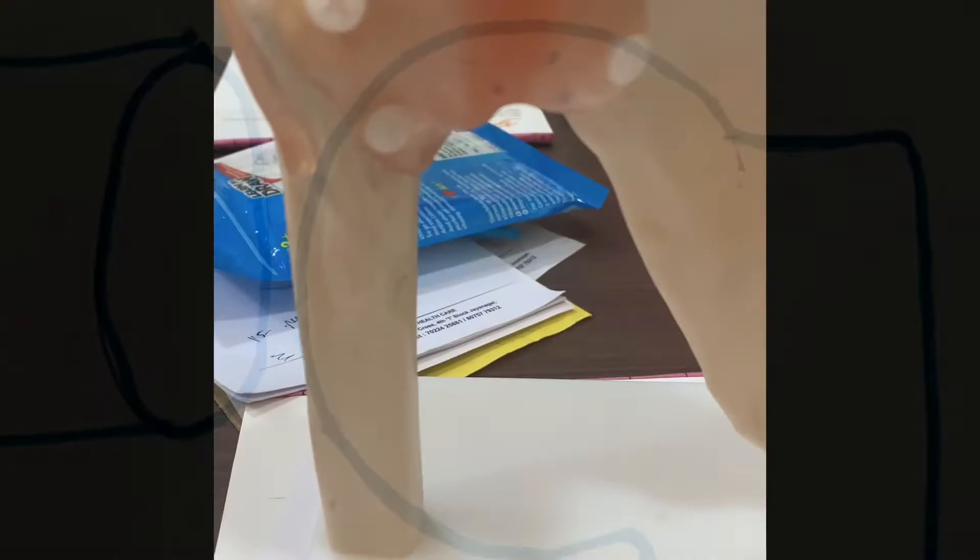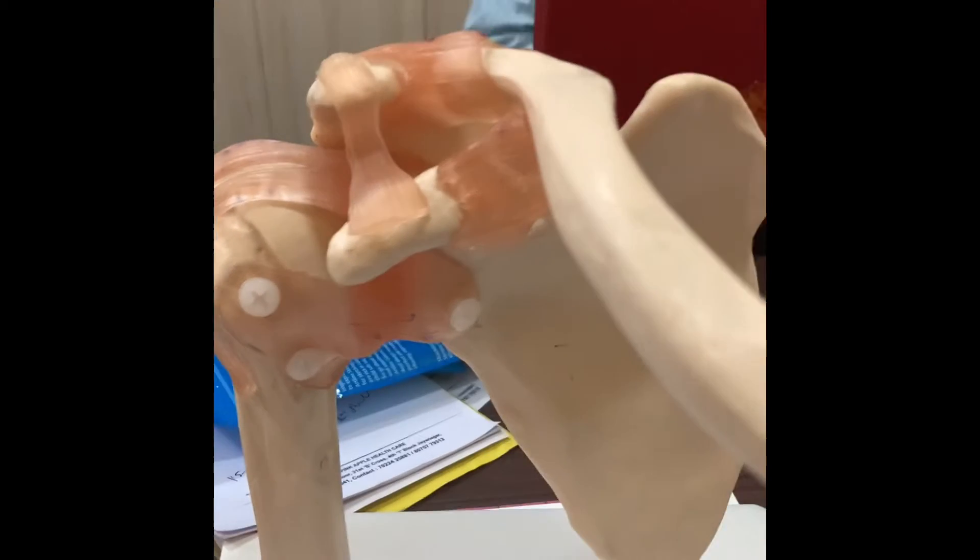This is the shoulder joint. This picture shows the ball in the socket which forms the shoulder joint, and this shows how the joint is in place.